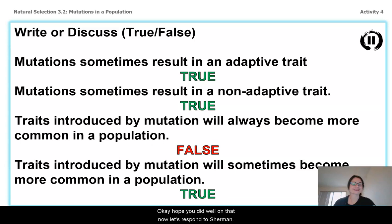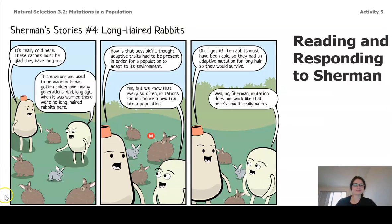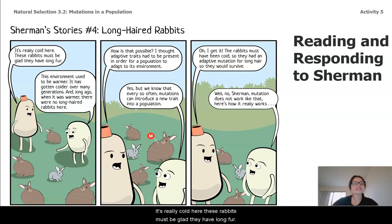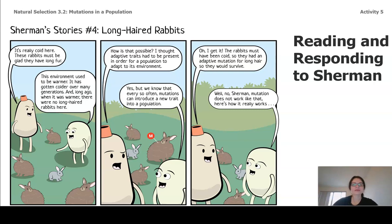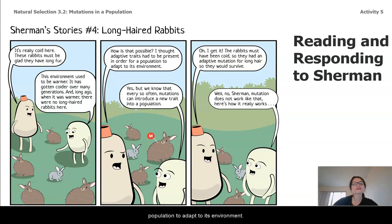Now let's respond to Sherman. So, long-haired rabbit. It's really cold here. These rabbits must be glad they have long fur. This environment used to be warmer. It's gotten colder over many generations. And long ago, when it was warmer, there were no long-haired rabbits here. How is that possible? I thought adaptive traits had to be present in order for a population to adapt to its environment.